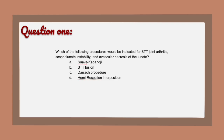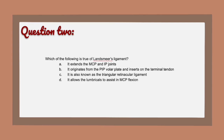Question 1: Which of the following procedures would be indicated for STT joint arthritis, scapholunate instability, and avascular necrosis of the lunate? A) Suave-Kapandji, B) STT fusion, C) Darrach procedure, D) Hemi-resection interposition.